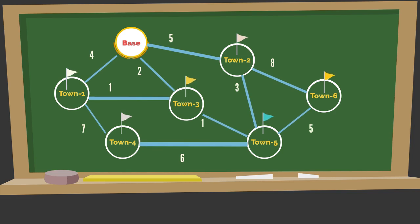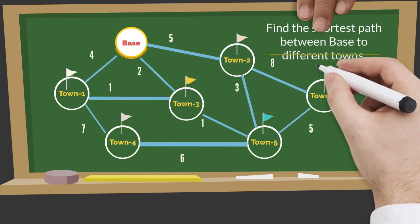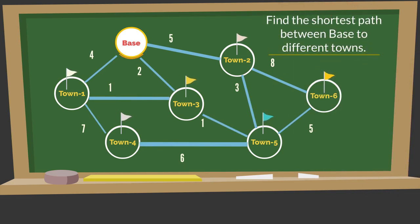This problem has been taken from GCE A-level computer science 9618 sample paper. The question is: calculate the shortest distance between the base and each of the other towns in the diagram using Dijkstra's algorithm. Show your working and write your answers in the table provided.